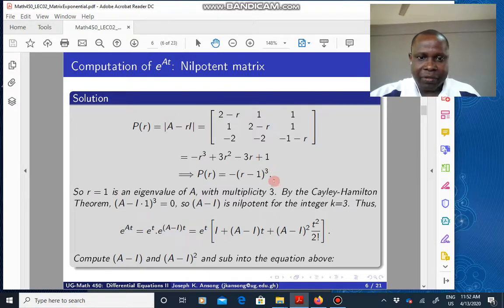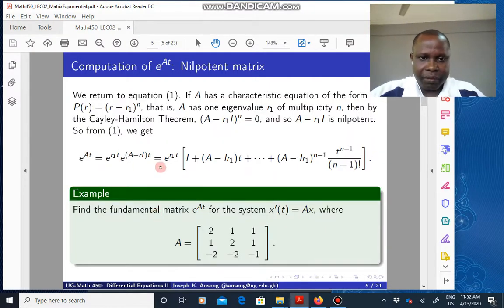So by the Cayley-Hamilton theorem, I can replace R with A, and one here with my identity matrix, and that vanishes, which means that A minus I is nilpotent, where the integer is three. So if I put it back into the equation, this equation here, the third term,